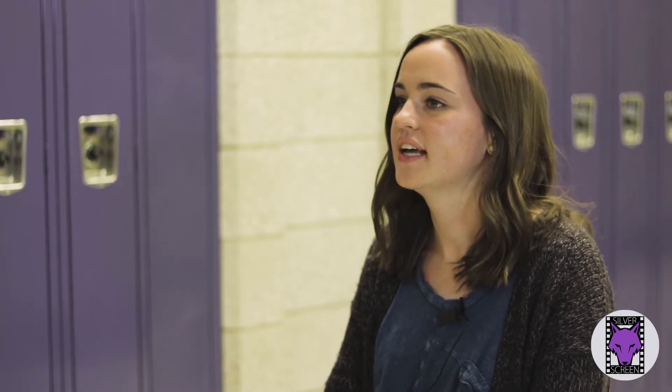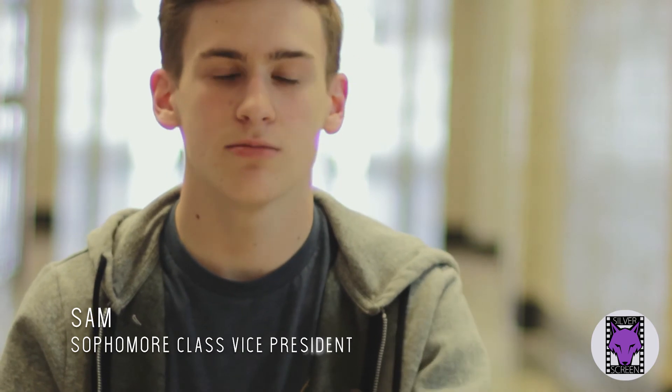So class officers are over their own specific class. I'm a senior class president, so I'm over the senior class. SBOs are over the entire student body. Basically you declare your candidacy, then you bring in posters and they hang up in the school, you advertise for yourself, and then you go to an assembly where they'll have panels and you'll get to give a speech. Then students will vote and you'll figure out who became your class officers.